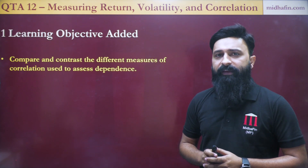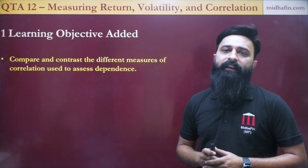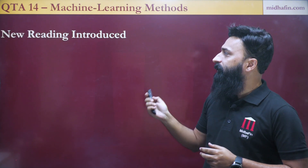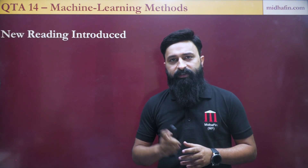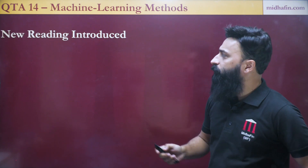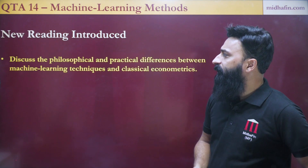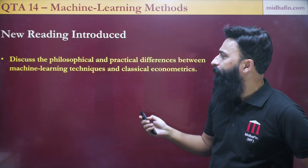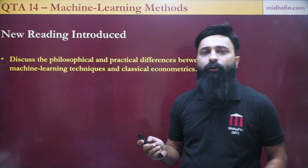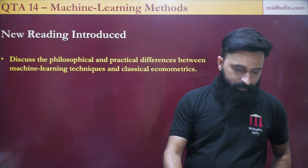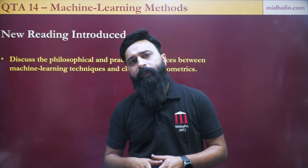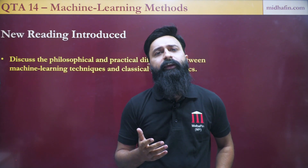The major changes which have taken place in the Quantitative Analysis module is the addition of two new chapters. The first one is Machine Learning Methods, QTA 14. The first learning objective covers the philosophical and practical differences between machine learning techniques and classical econometrics. It is very important to understand that the approach to model building is quite different using machine learning compared with statistical econometrics.